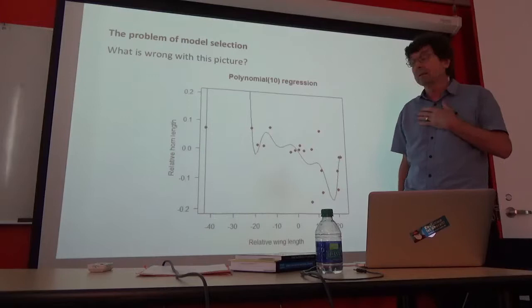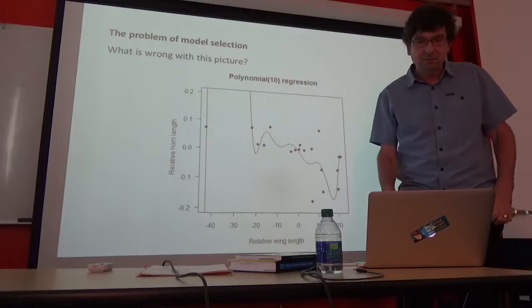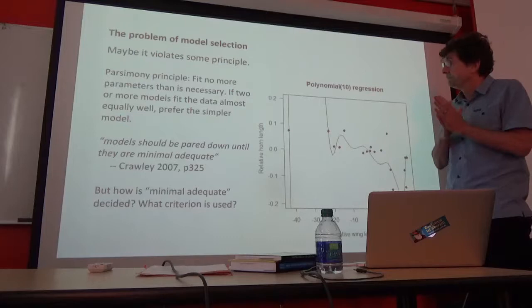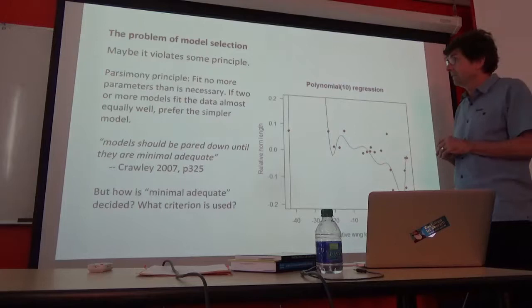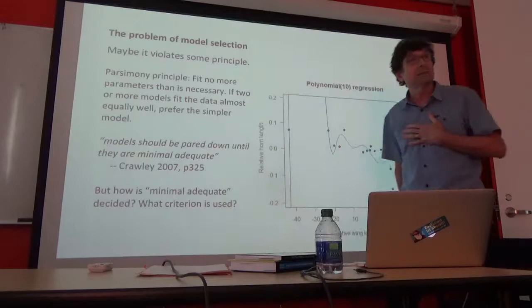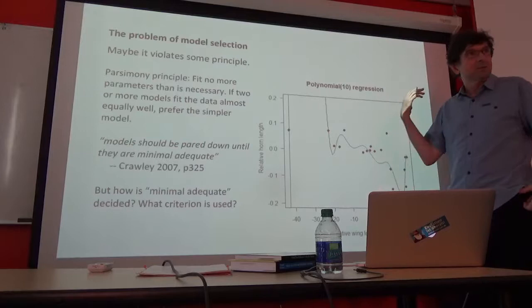That brings up another objective already discussed: one of the other things we like to do with data is to use it to predict. Another reason why we might feel uncomfortable fitting a tenth-degree polynomial is that it's not a minimum adequate model — it's too complicated for the data. There's this idea in Crawley's R book that's common: that models should be pared down, terms should be thrown out. But how do you decide which terms to throw out?